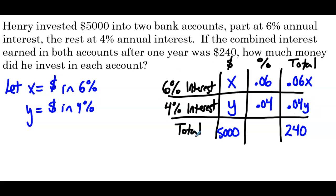One thing to point out: when we've used this table before, sometimes the second column was money — like how much per pound or per cubic foot in the last example. But notice the money is the fixed amounts now — he's putting part into a 6% account and part into a 4% account. So the second column is the percentage, which means the first column is the amount of money. Just in case you were a little confused there.